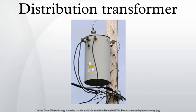Distribution transformers are made using a core made from laminations of sheet steel stacked and either glued together with resin or banded together with steel straps. Where large numbers of transformers are made to standard designs, a wound C-shaped core is economic to manufacture. A steel strip is wrapped around a former, pressed into shape, and then cut into two C-shaped halves which are reassembled on the copper windings. The primary coils are wound from enamel-coated copper or aluminum wire, and the high-current low-voltage secondaries are wound using a thick ribbon of aluminum or copper. The windings are insulated with resin-impregnated paper. The entire assembly is baked to cure the resin and then submerged in a powder-coated steel tank filled with transformer oil, which is inert and non-conductive. The transformer oil cools and insulates the windings and protects the transformer winding from moisture, which will float on the surface of the oil.